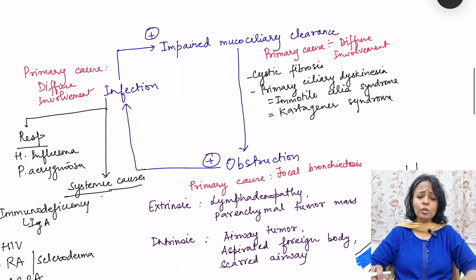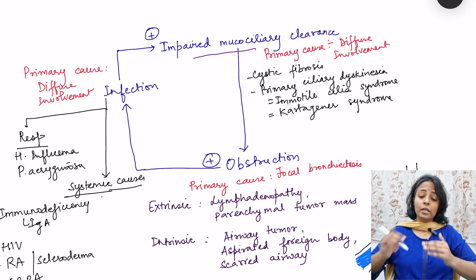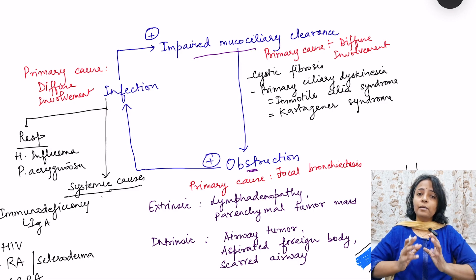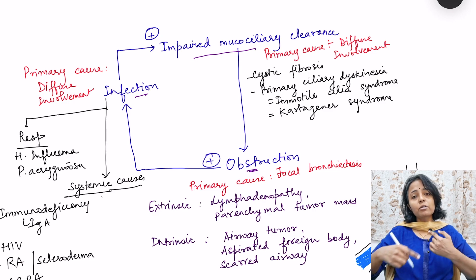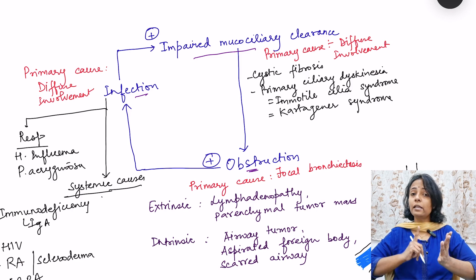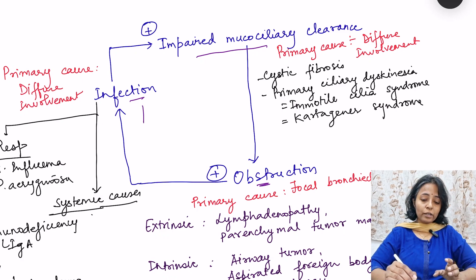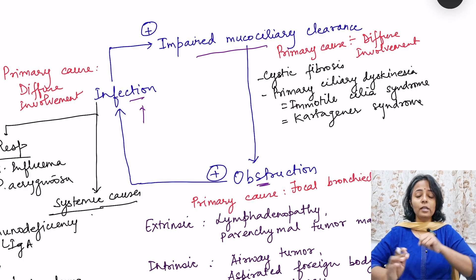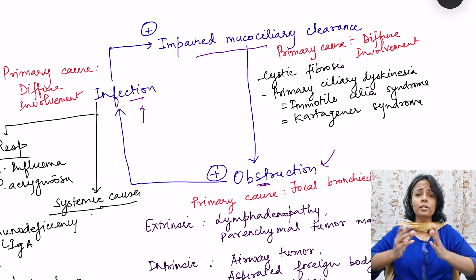This is a vicious feedback cycle between impaired mucociliary clearance — where mucus remains in the bronchioles and bronchi and is not cleared — creating obstruction. Because of the obstruction, there are high chances of infection, leading to chronic inflammation. Infection again causes impaired mucociliary clearance. So this is a vicious cycle: impaired mucociliary clearance, obstruction, and infection. The cycle can start anywhere.